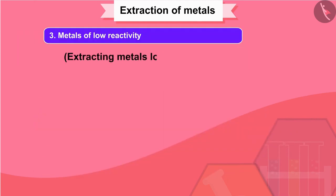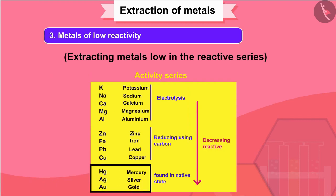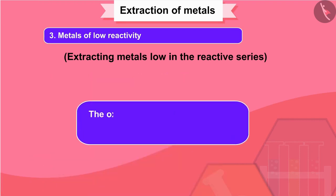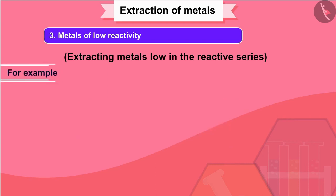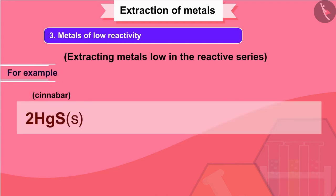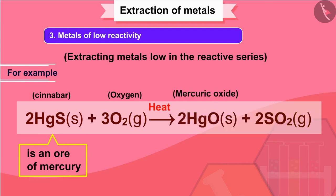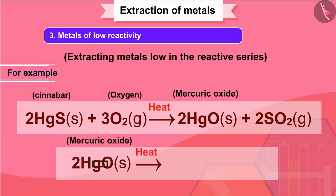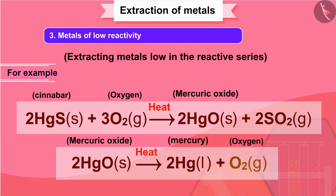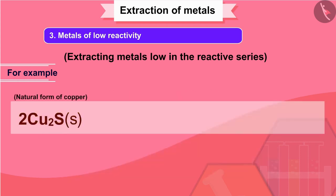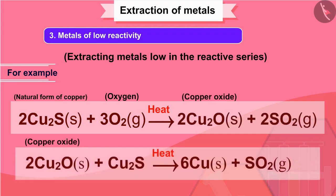Extracting metals low in the reactive series: metals low in the activity series are very unreactive. The oxides of these metals can be reduced to metals by heating alone. For example, cinnabar, HgS, is an ore of mercury. When it is heated in air, it is first converted into mercuric oxide, HgO. Mercuric oxide is then reduced to mercury on further heating. Similarly, copper, which is found as Cu2S in nature, can be obtained from its ore by just heating in air.